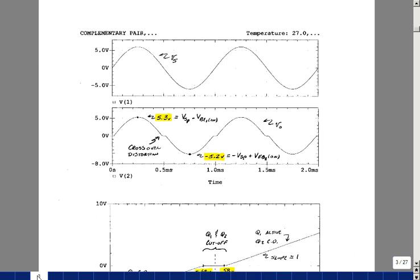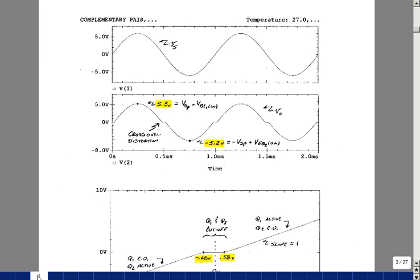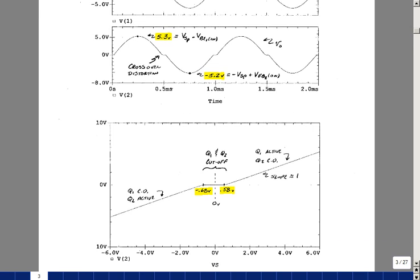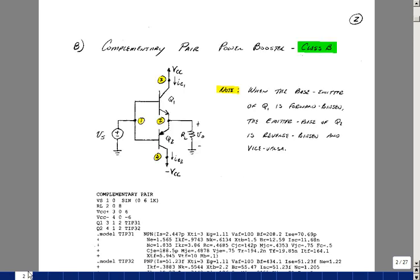The next page shows what the output looks like versus the input. The input goes between plus and minus 6 volts, and the output goes up to 5.3. There's a little bit of distortion, then it goes down to minus 5.2, and that repeats itself. You can also plot the output versus the input and get a curve that's flat here, then a slope and a slope where the slope is around 1. Let's go back and look at the circuit to figure out what's going on.